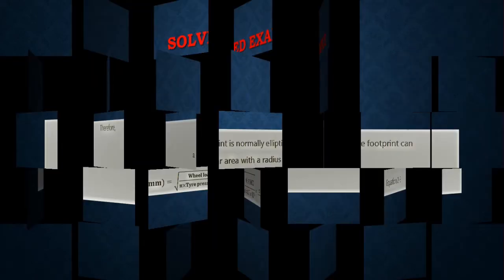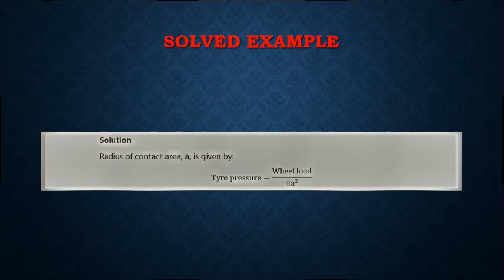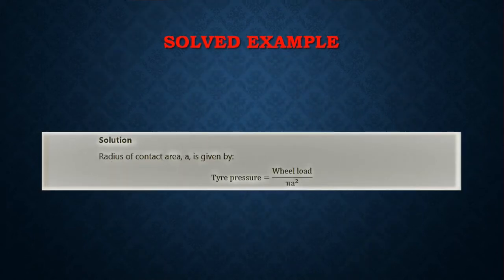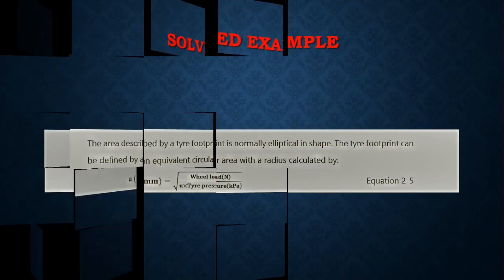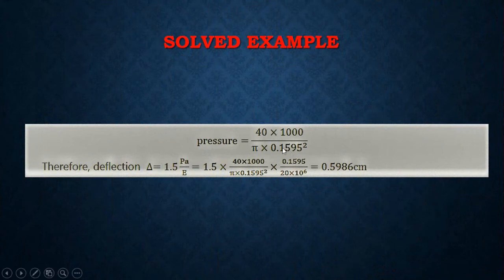We already have the radius 'a'. To verify tire pressure it equals wheel load divided by pi a squared. We already have the value of 'a' as 15.95 centimeters, which is 0.1595 meters, and the wheel load is given as 40 kilonewtons. Substituting 40 by 1000 to convert to newtons, we can now proceed to substitute into the deflection formula for a flexible pavement.